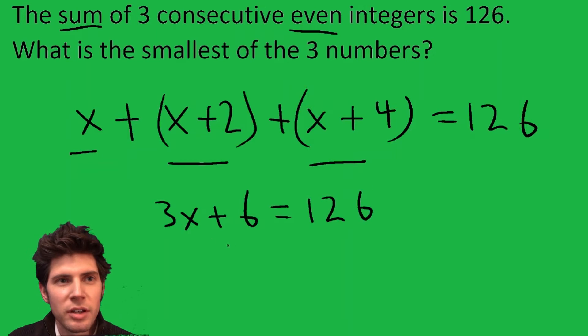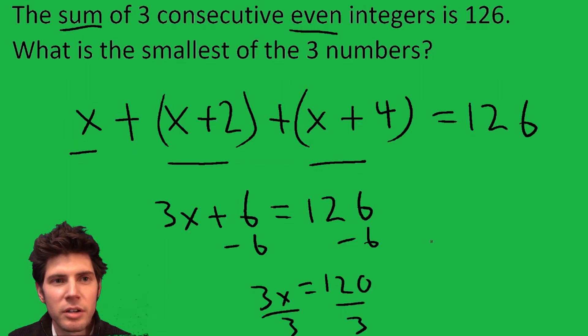Subtract 6 from both sides, 3x equals 120, and then divide both sides by 3. We get x equals 40.